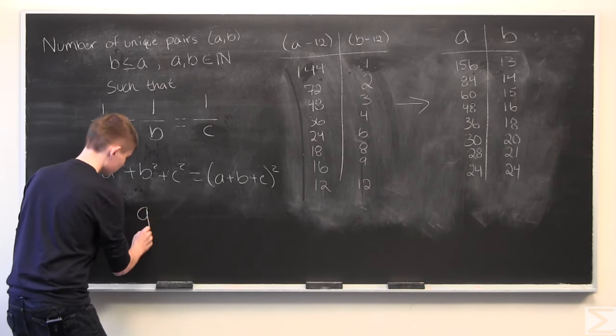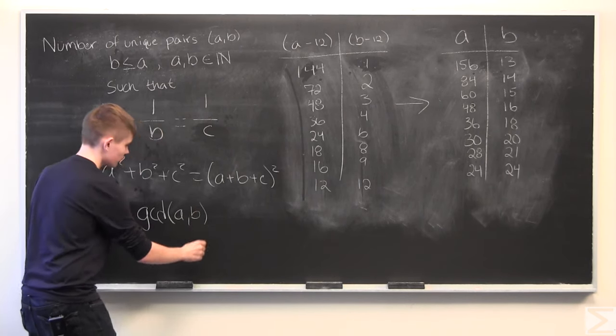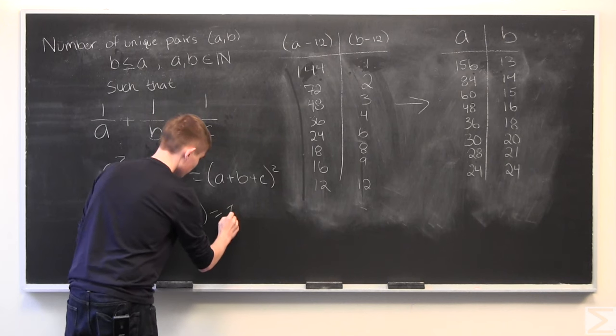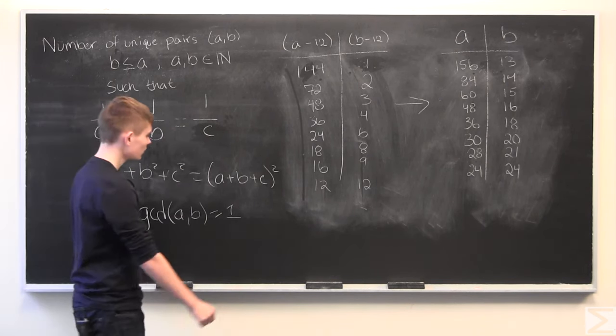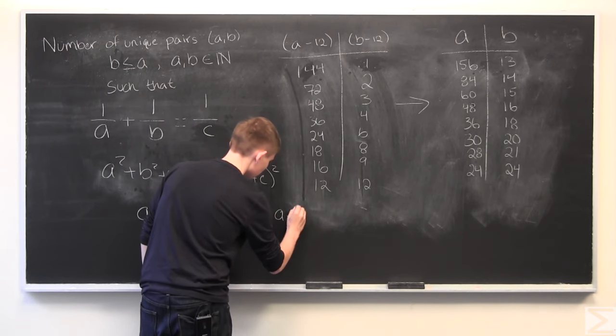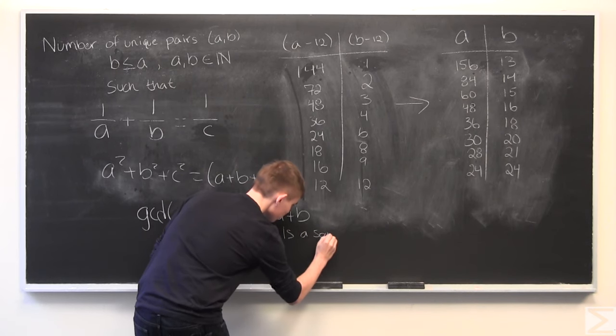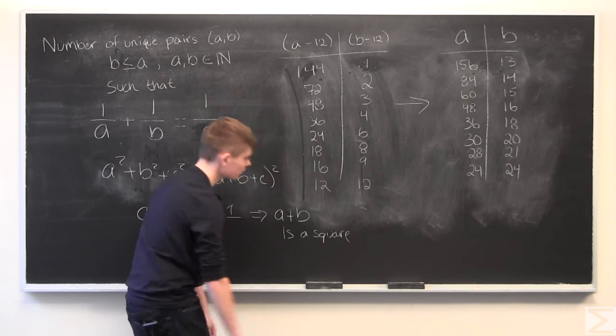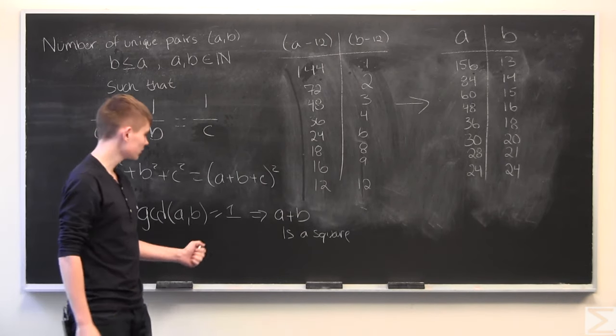And also if a and b are relatively prime, or if the greatest common factor of a and b is 1, then a plus b is a square number. That's another thing that you should try to figure out why is true.